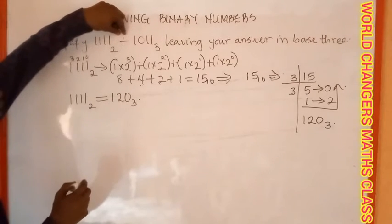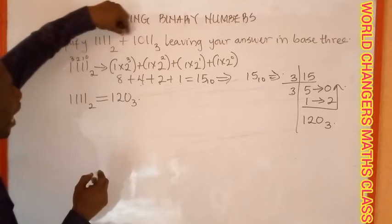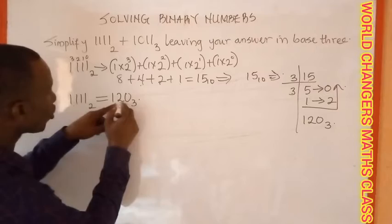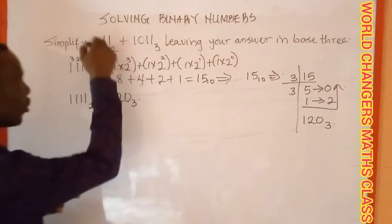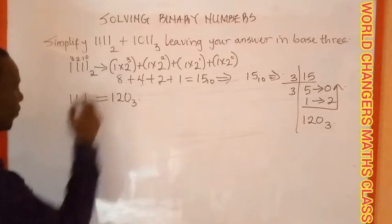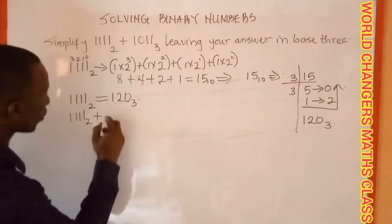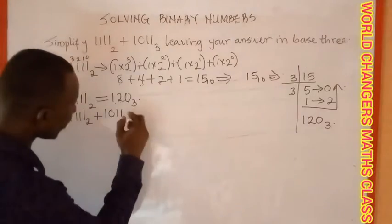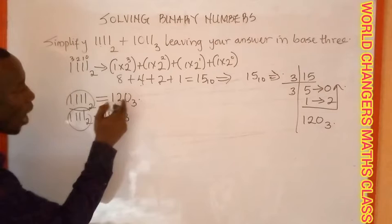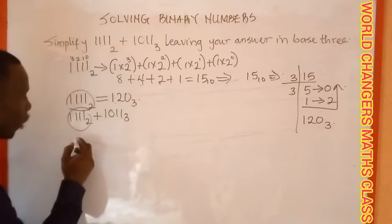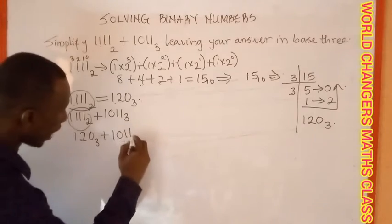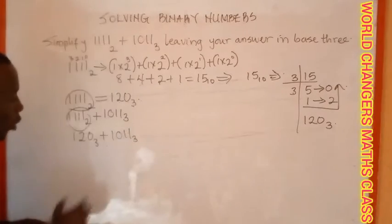Now I cannot directly substitute; I cannot just put one two zero base three into the expression without rewriting the problem. Going back to our equation, I have 1111 base two plus 1011 base three. Since 1111 base two is equivalent to 120 base three, I substitute to get 120 base three plus 1011 base three.